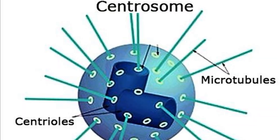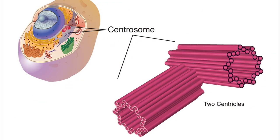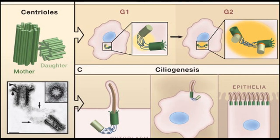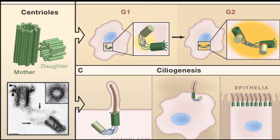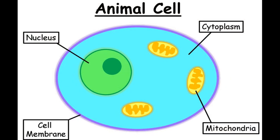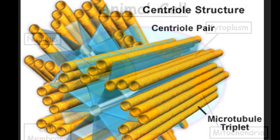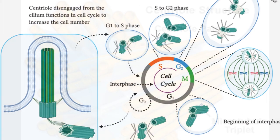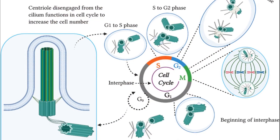Centrosome is present in animal cells. Just outside the nucleus of the animal cell, there is a small clear area of cytoplasm without any granules. In this portion of the cytoplasm, called the centrosome, one or two tiny microtubular cylindrical structures develop. These are called centrioles. The centriole initiates cell division in animal cells.